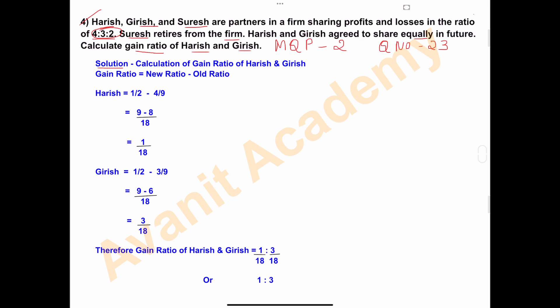Solution: Calculation of gain ratio of Harish and Girish. To calculate gain ratio, the formula is gain ratio equals new ratio minus old ratio. New ratio: after retirement of Suresh, Harish and Girish agreed to share equally in future, so the new ratio is 1:1.